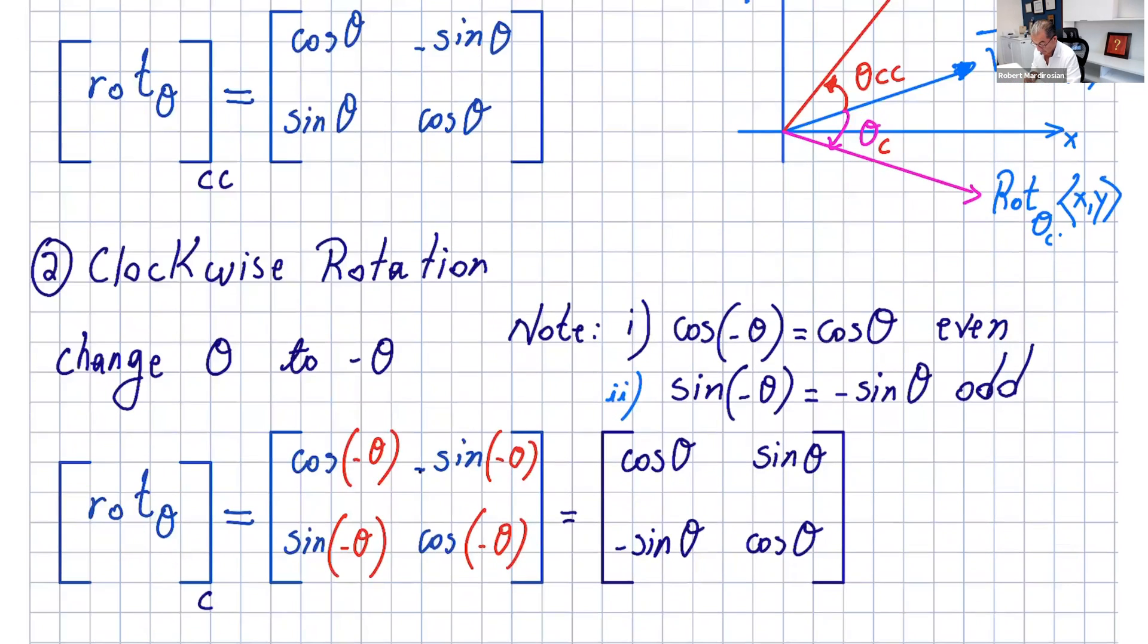So here we're going to get, and I put a new matrix as C, which is clockwise. You get cosine of negative theta, negative sine of negative theta, sine of negative theta, and cosine of negative theta.